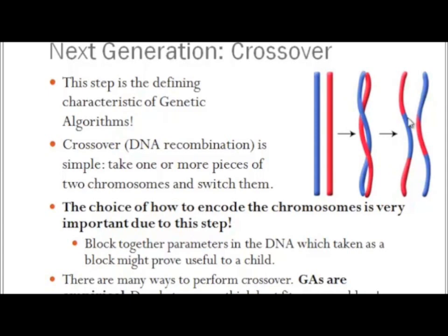There are many options you can use. This particular picture demonstrates two-point crossover. You can equally do one-point crossover, where you have just one point — red here, and then blue for the rest. Or you can do uniform crossover, where at each bit you have a small probability of crossing over to the other one, then crossing back. There are many options.